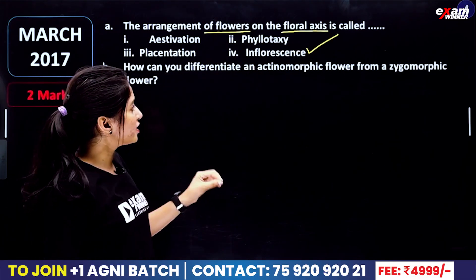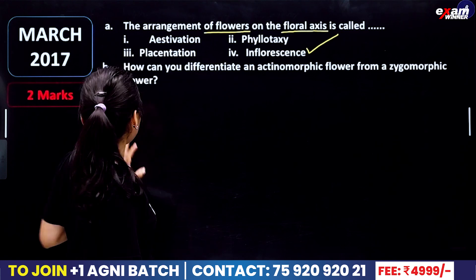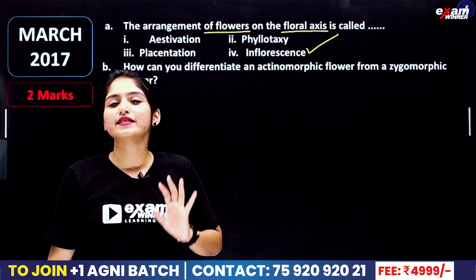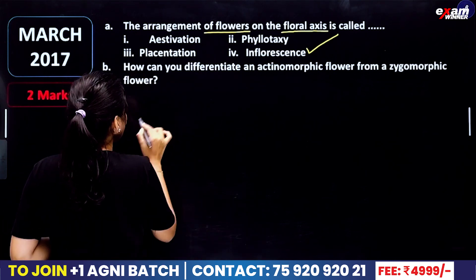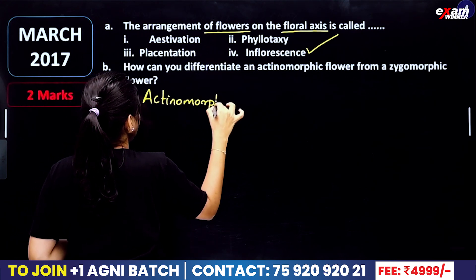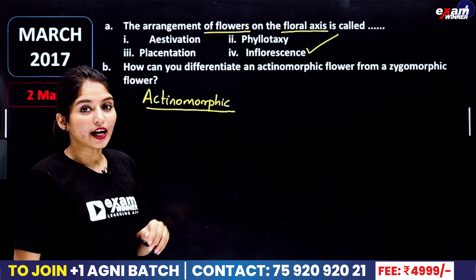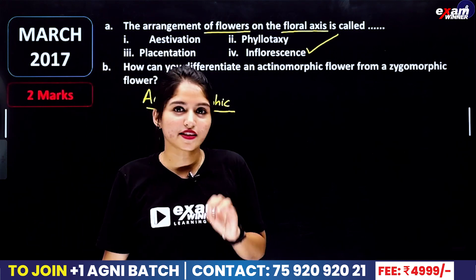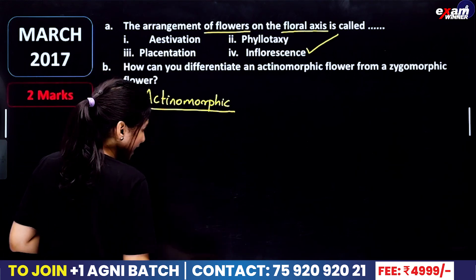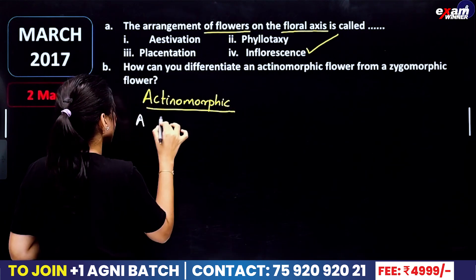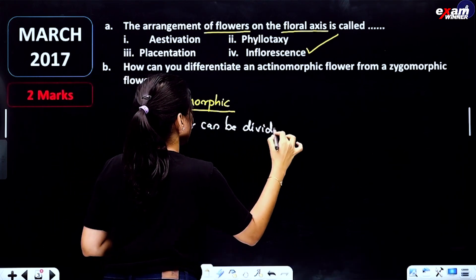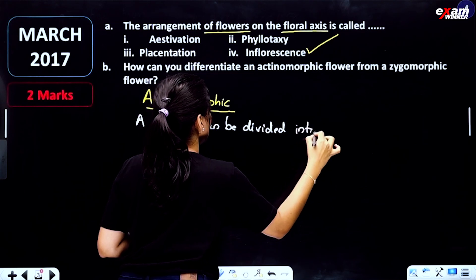Can you differentiate an actinomorphic flower from a zygomorphic flower? What is the actinomorphic flower? We can divide it into two halves. The flower can be divided into two equal halves in any plane.